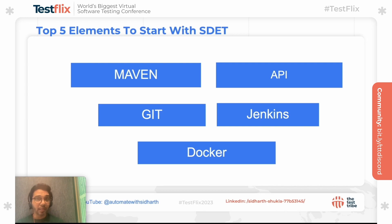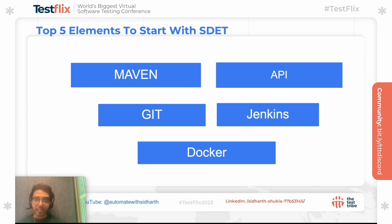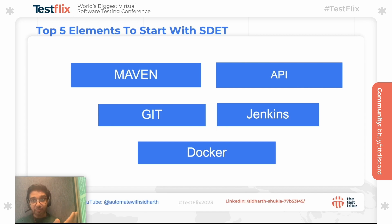As an SDET, compared to UI and mobile, API has much more priority because it is expected for you to be involved in API backend service integration testing. Git is also essential because you are going to contribute to both dev code and QA code, so proper knowledge of source code repository management is very important. Fourth is pipeline — you should have very good knowledge in pipeline.